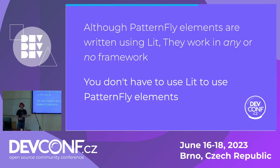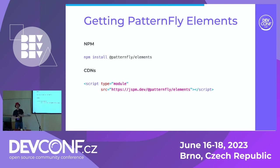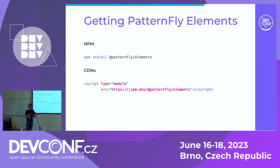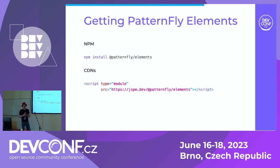Although Patternfly Elements are written using Lit, you don't have to use Lit — you can use them in any framework or in no framework. So how do you get Patternfly Elements? If you're using NPM and the node ecosystem, you can just npm install @patternfly/elements, use your bundlers, and away you go. But you don't have to do that. I've spoken with teams building apps in Django, Java, or writing HTML pages in Drupal — they don't have the time, energy, inclination, or budget to mess with heavy complicated JavaScript tooling. If you want to use these components, you can just drop in a link to a CDN, load up all the component definitions, write some HTML, and you're off to the races.